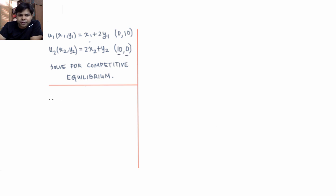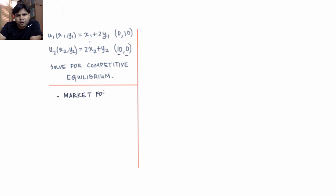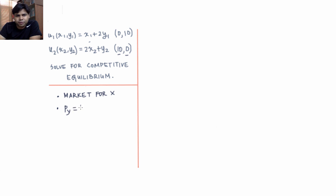Instead of following the four-step procedure used in the last couple of videos, we'll combine all the steps and solve this problem quickly. First, we pick one of the markets — let's say the market for x. We don't need to worry about the market for y, because if the market for x clears at a certain price, the market for y will automatically clear. Second, we pick one commodity and set its price to one, so let py equal 1 — y is our numeraire good.